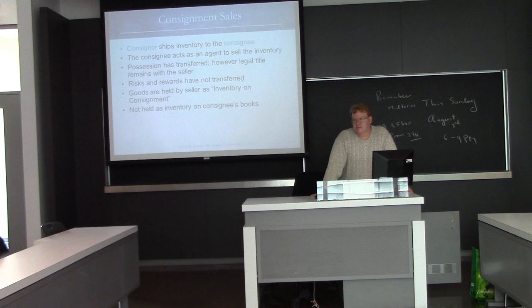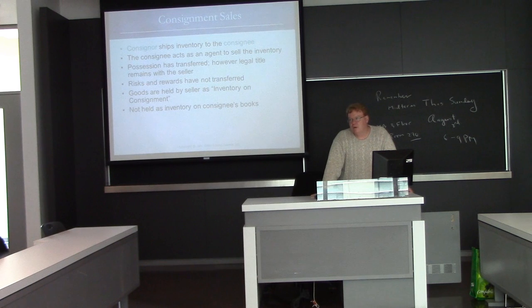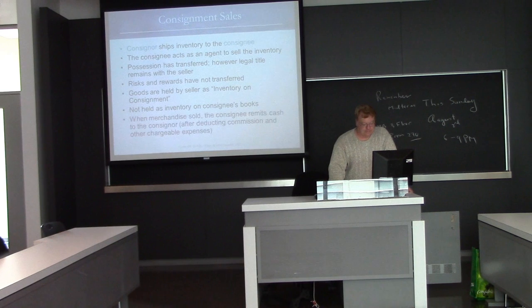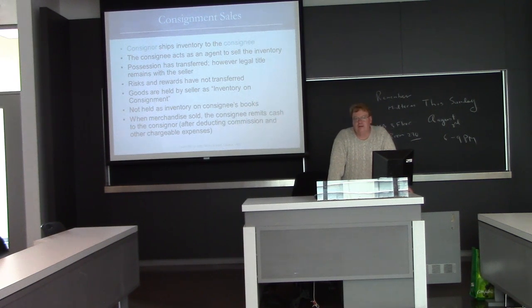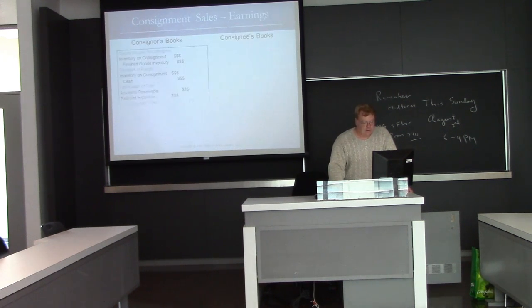The consignee, which is Concordia Bookstore, acts as an agent to sell the inventory. So the possession is transferred, but not the legal title. The legal title has not been transferred. The goods are held for the seller as inventory on consignment. They're not inventory on consignee's, but they're inventory on consignment on the consignor's book. Consignor, that's McGraw-Hill. Consignee, that's Concordia or McGill Bookstore.